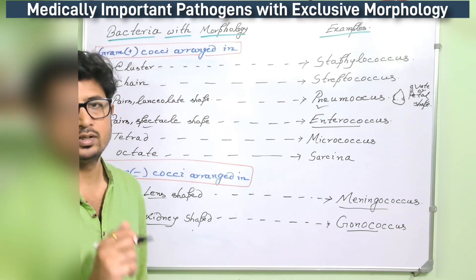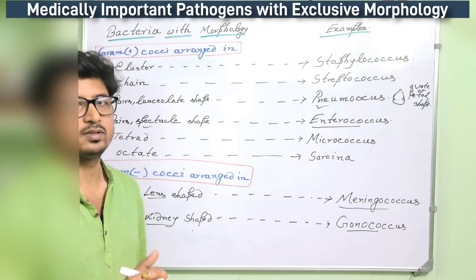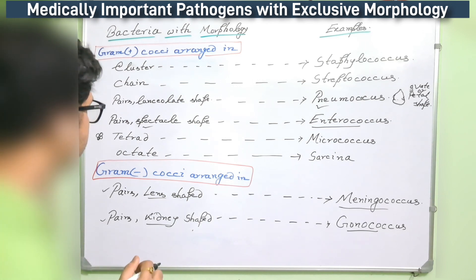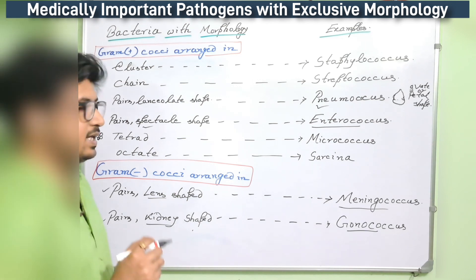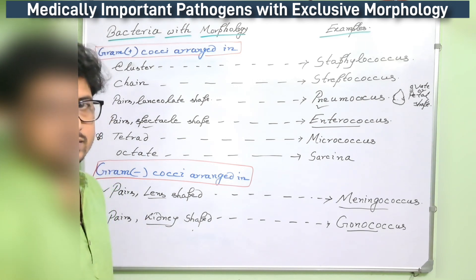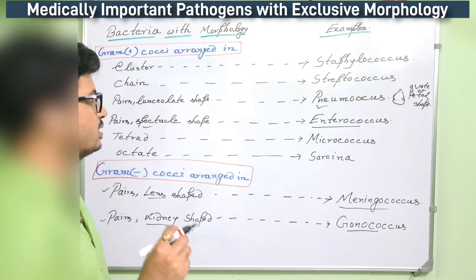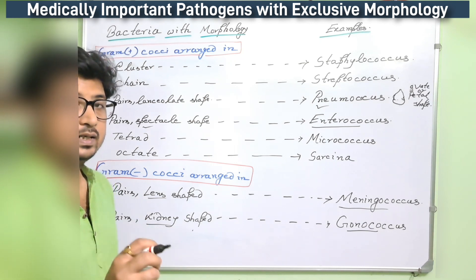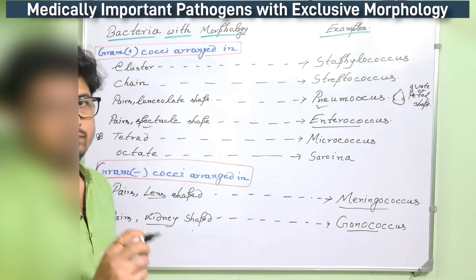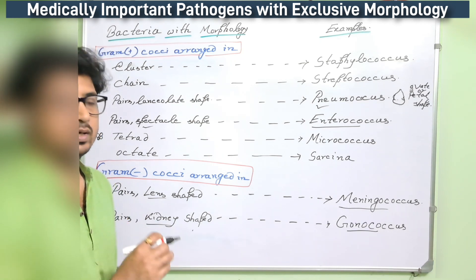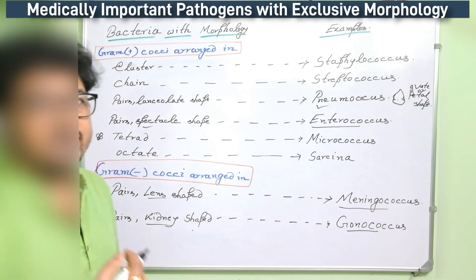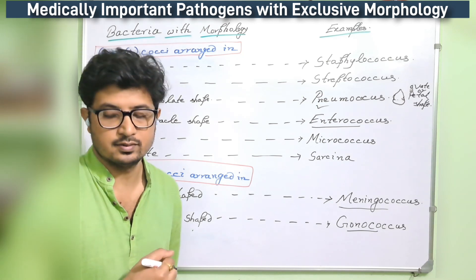You can diagnose bacteria much faster if you have this knowledge of the particular morphological aspect of each individual organism. These are the most medically important bacteria. Now I will be going to bacilli structures.